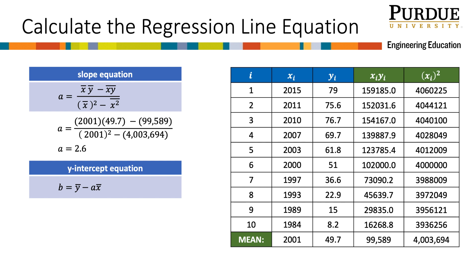Looking at the y-intercept equation, I see that I need the mean of the y's, the a value, and the mean of the x's. I already have all of these, so I will plug in that b equals 49.7 minus 2.6 times 2,001. That gives me negative 5,203.